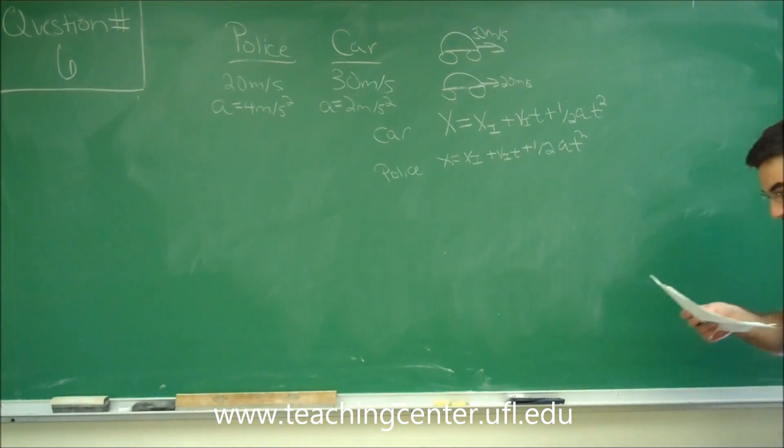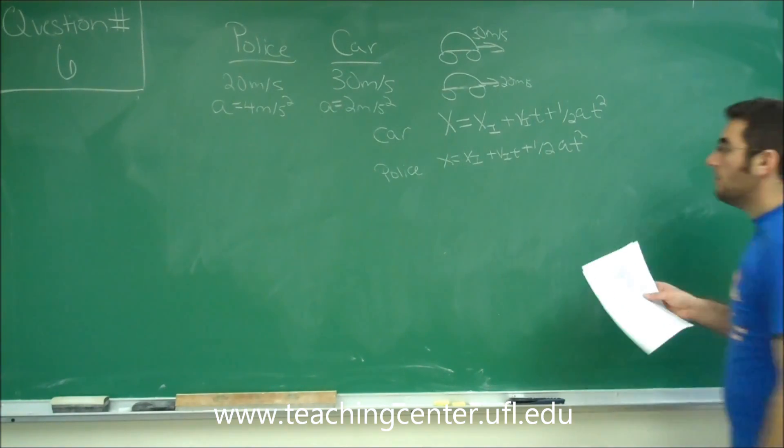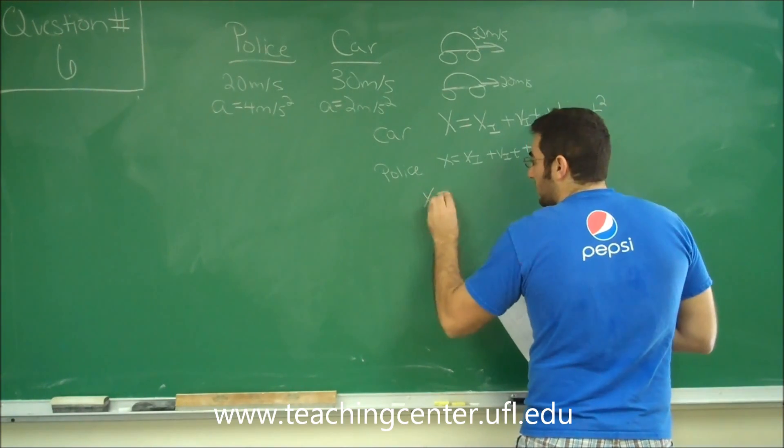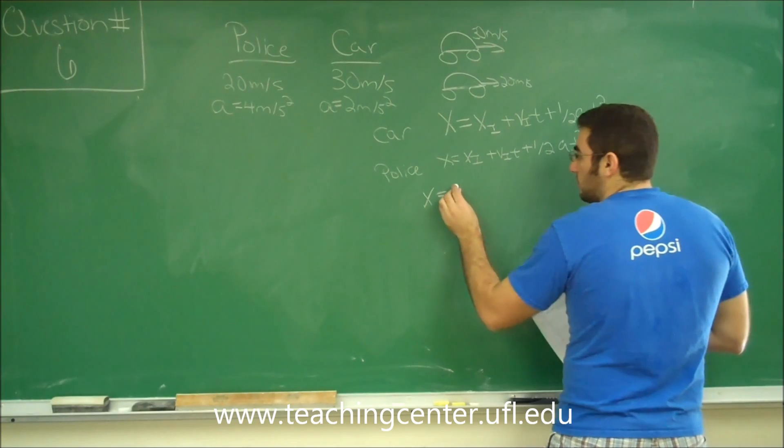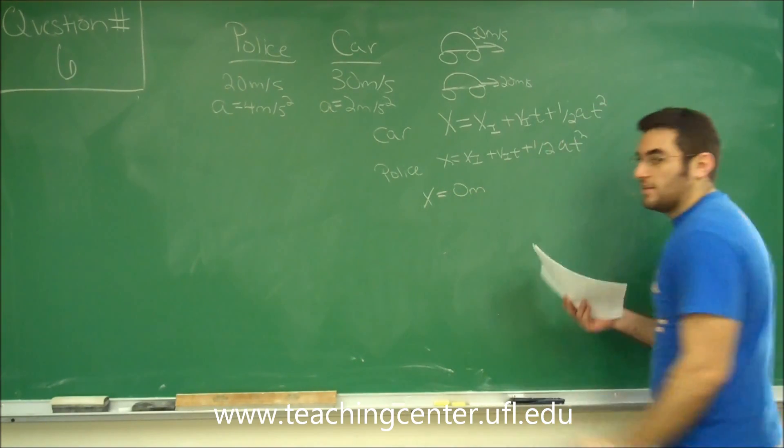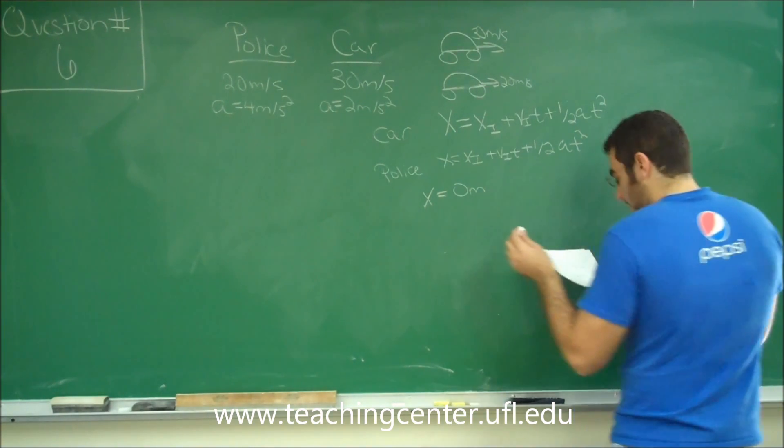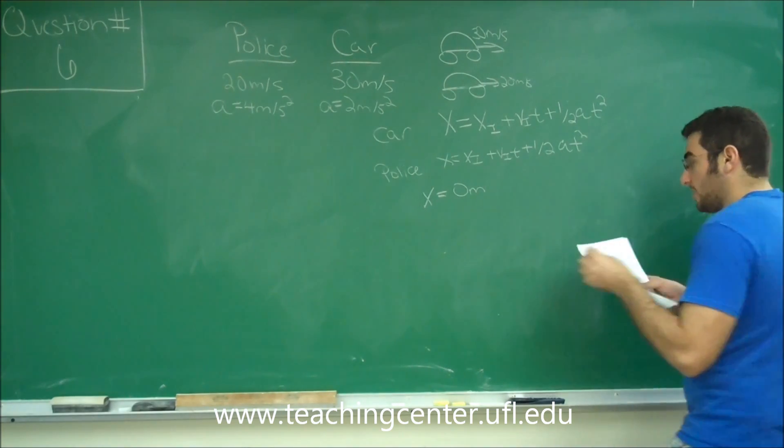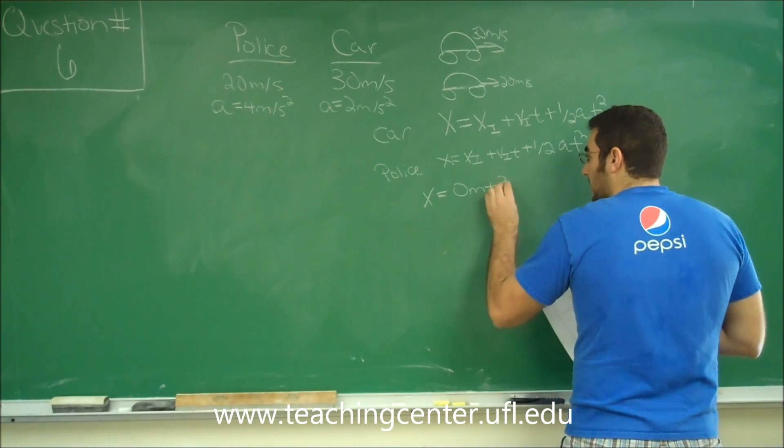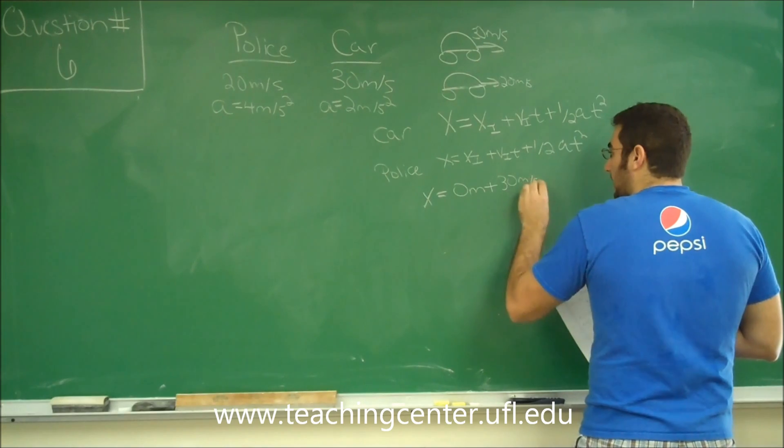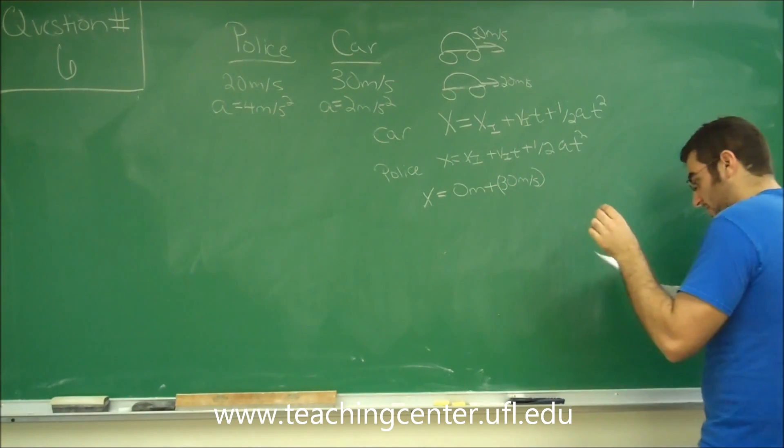So we'll start out doing it with the car. So the car, we're looking for x. The initial term ends up dropping out because we just assumed that they started on a regular surface of 0 meters. And the car was going 30 meters per second. So plus 30 meters per second times the time, which we don't know the time.